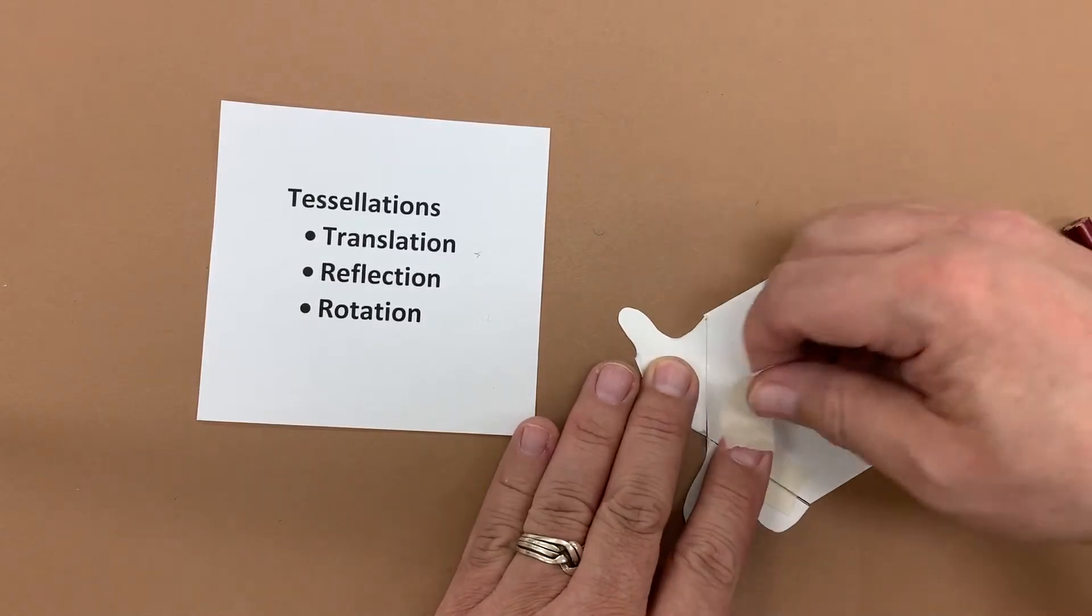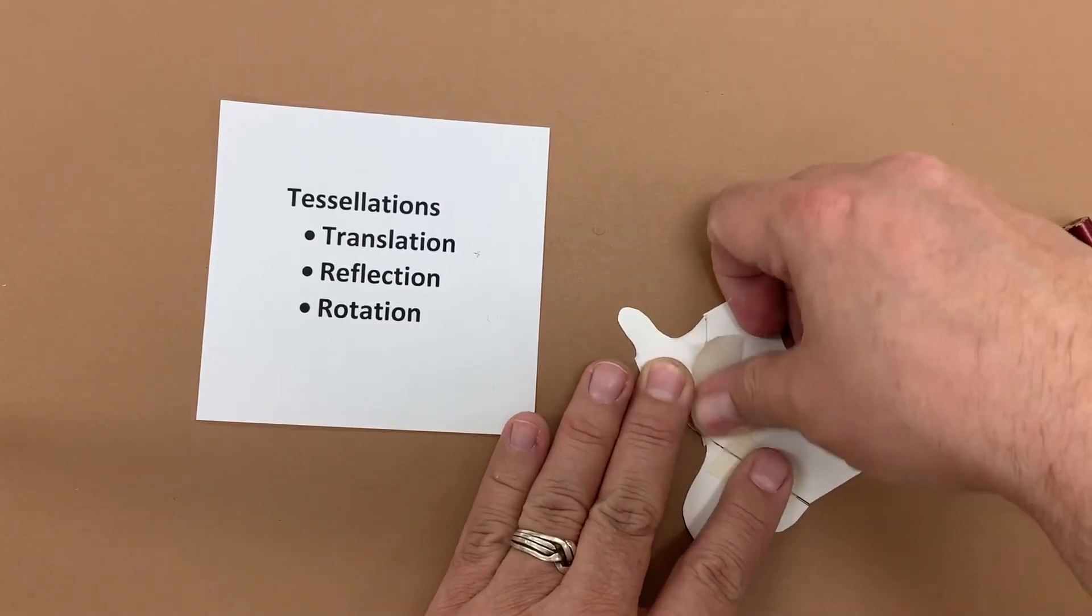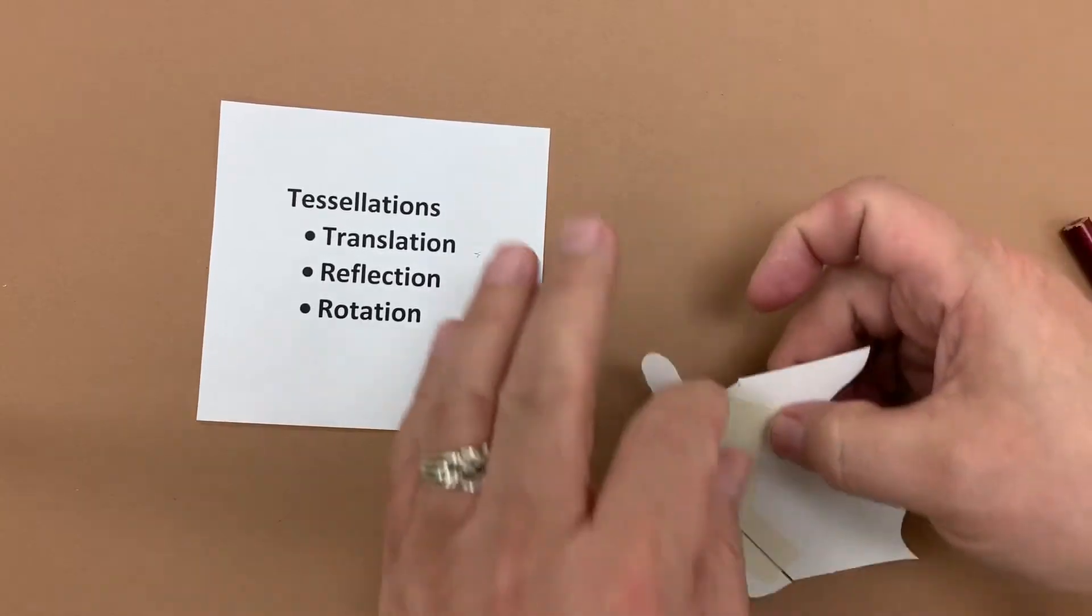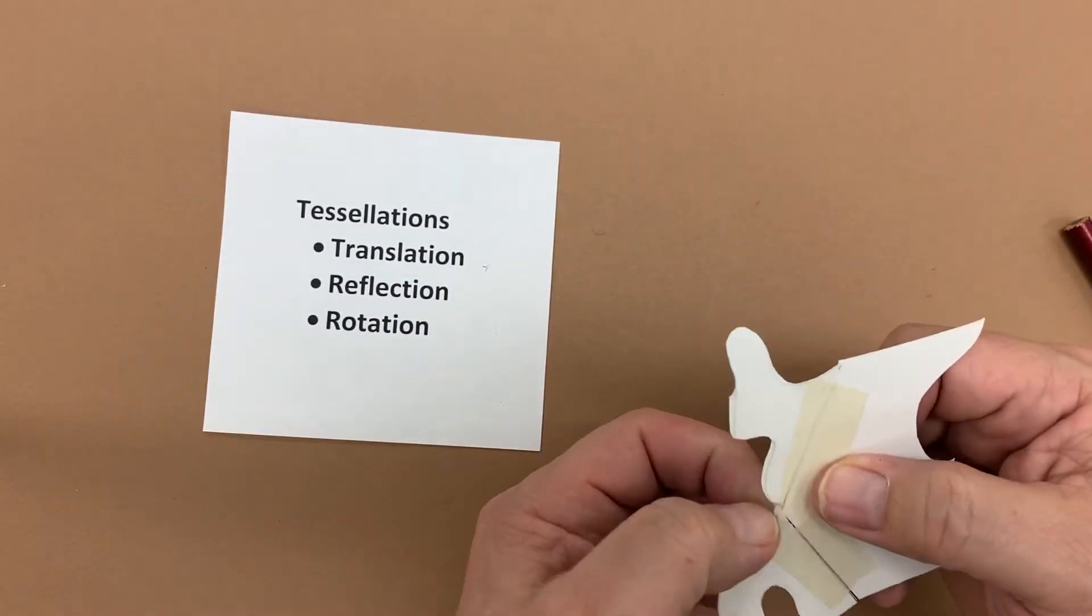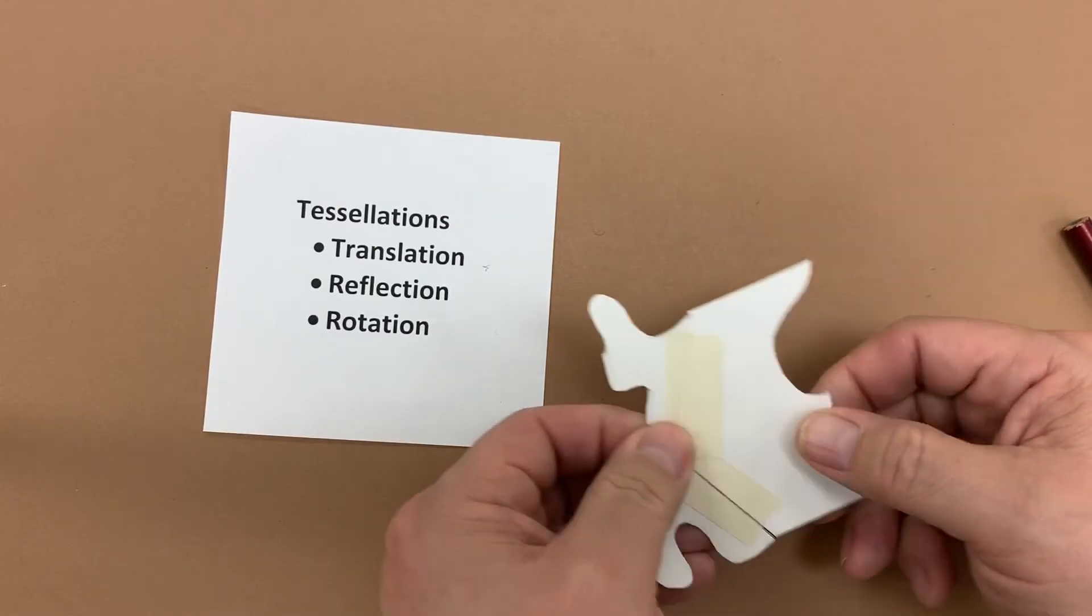Make sure again no gaps. If it's too big make sure you fold over any little corners or cut them off because that will make things difficult later.